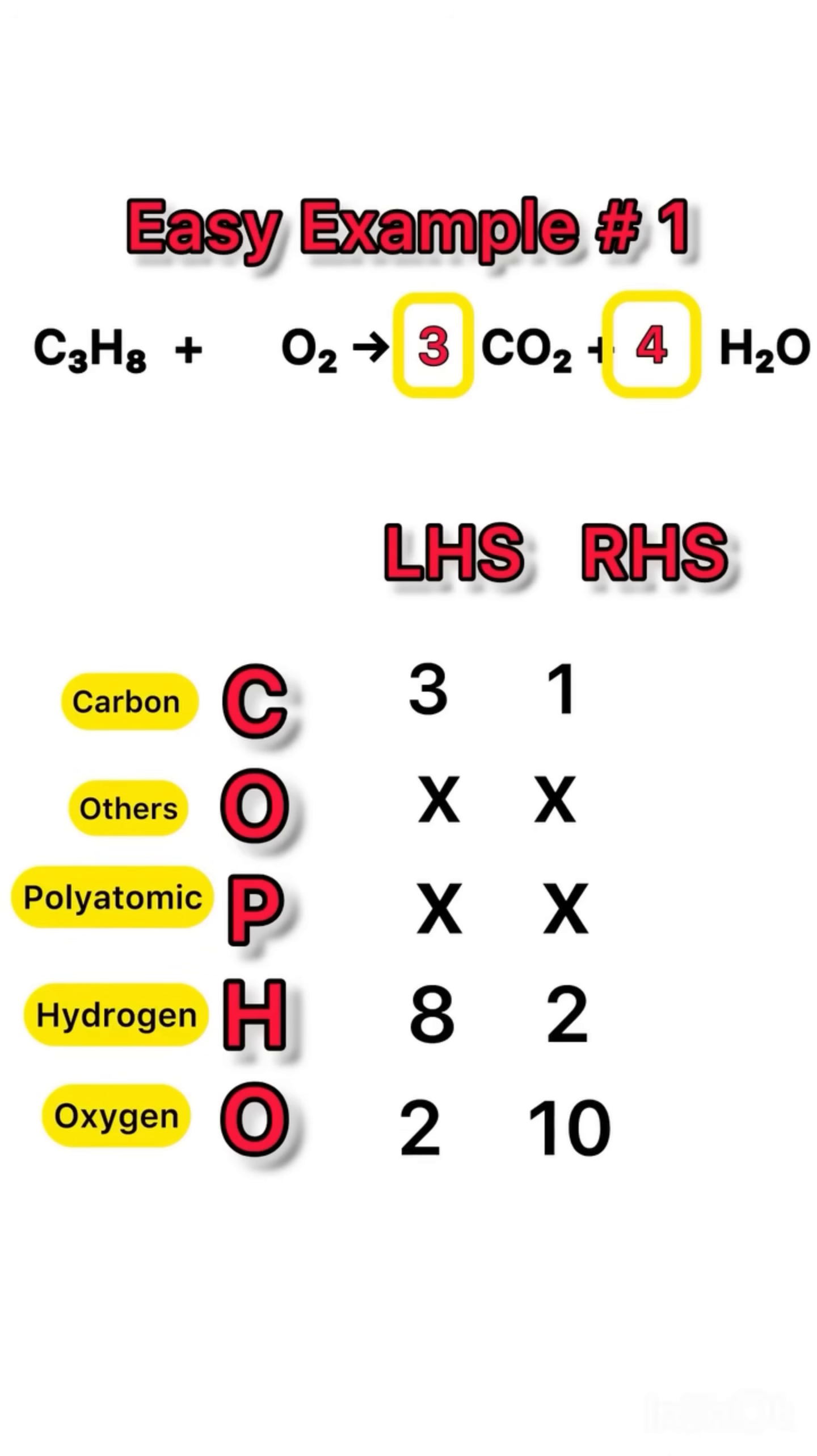Oxygen: left side O2 has 2 oxygen atoms. Right side CO2 has 3 into 2, that is 6 oxygen atoms, and H2O has 4 into 1, that is 4, so total 10. So put 5 before O2 on left hand side to balance it. Now look, all atoms match. First equation balanced.